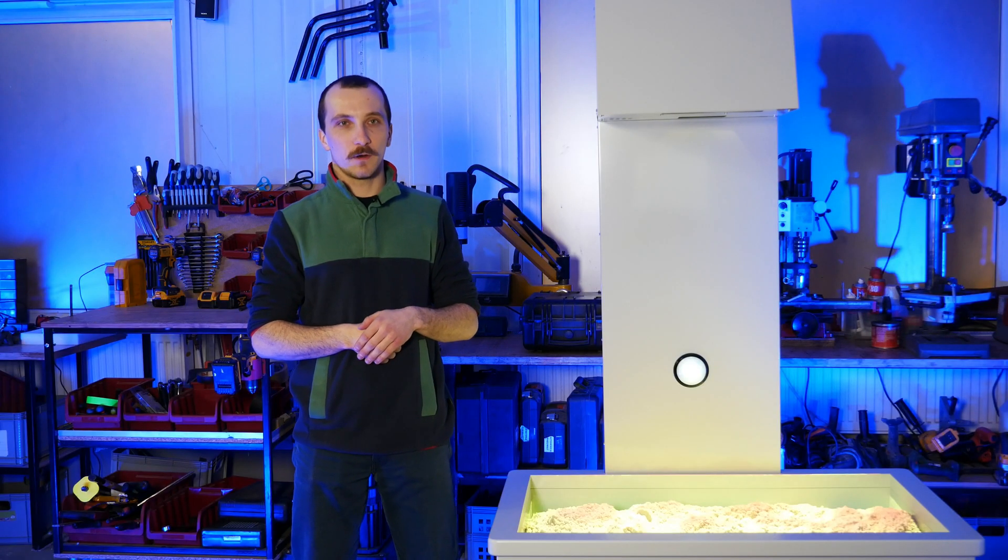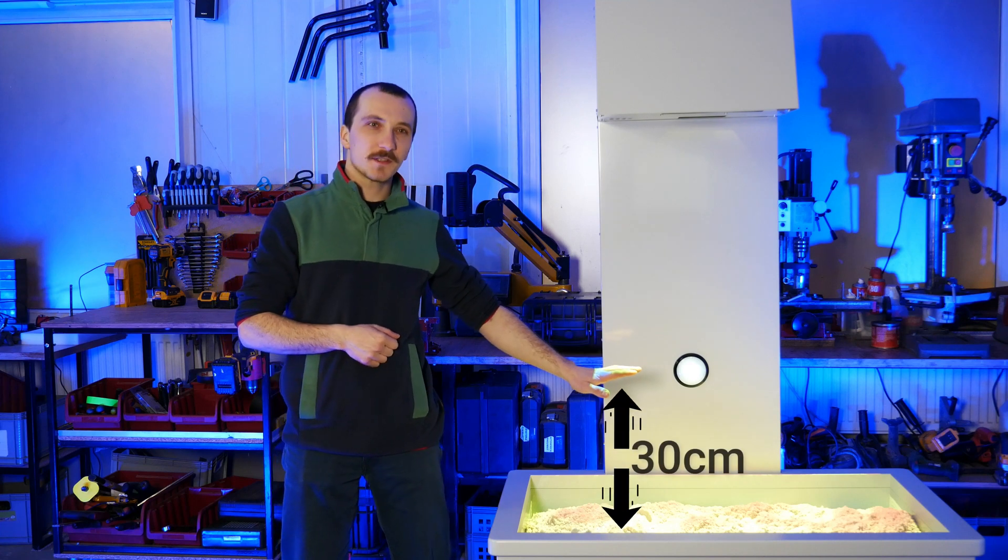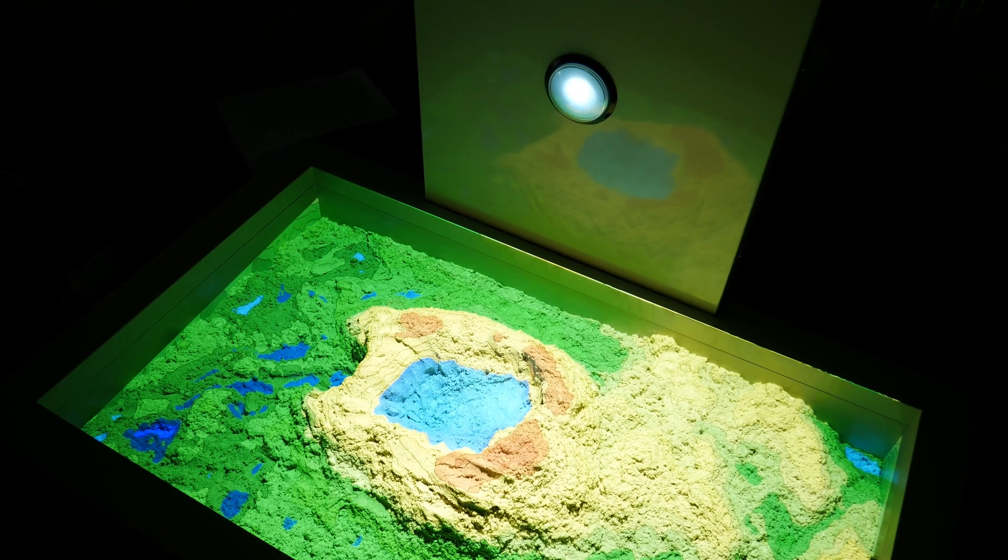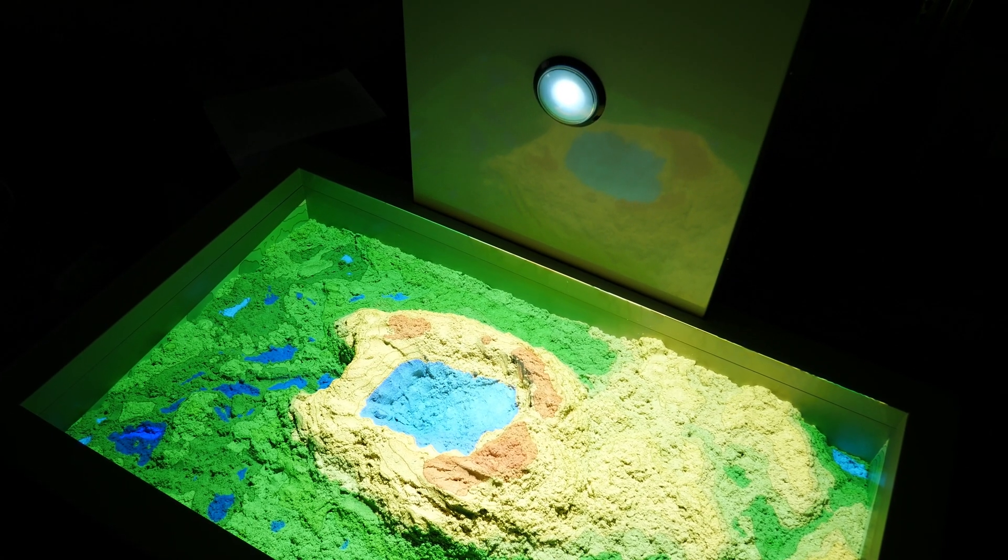To induce the water flow you have to raise your hand about 30 centimeters above the sandpit. Water will appear right below your hand. To remove it from the map simply push the button once.